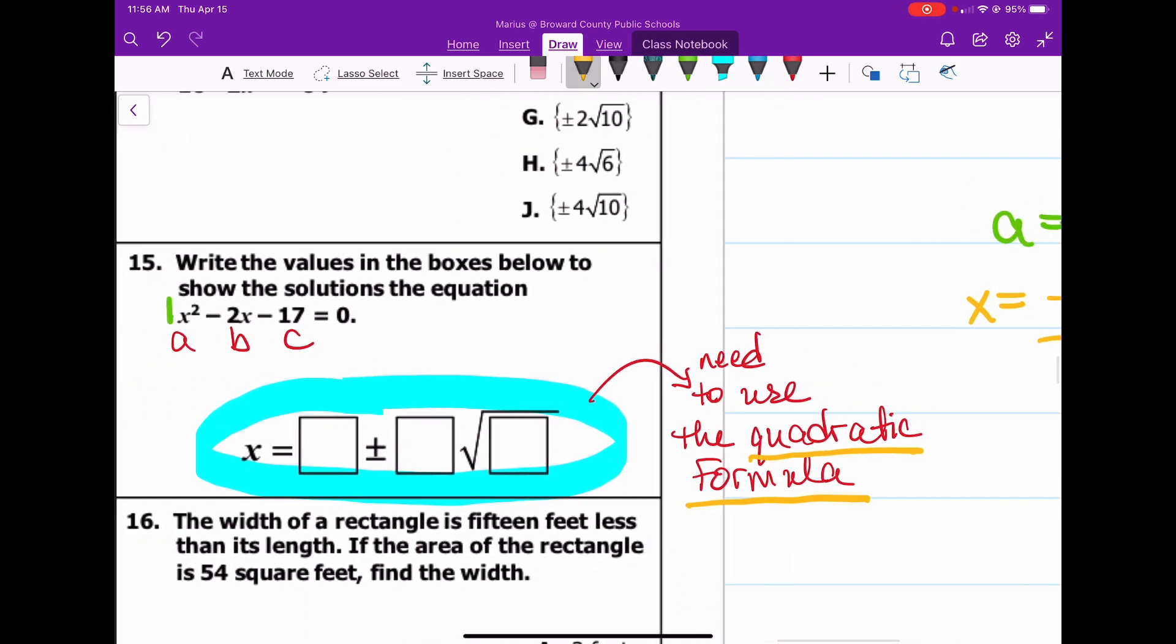And just to make sure we all understand that, I'll do this over here. Here's a, positive 1. Here's b, negative 2. Here's c, negative 17.